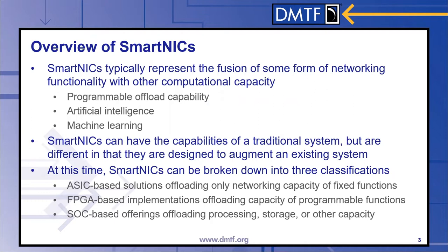SmartNICs are becoming common in the data center. The best way to describe them is some type of networking functionality combined with computational capacity. This computational capacity could include programmable offload capabilities, embedded artificial intelligence and machine learning, deep packet inspection for early malware detection, or other firewalling capabilities. When you think about where the SmartNIC sits in the overall hierarchy of a data center, it's really an extension of an existing computer system — meant to extend an existing server in a rack with its own computational capacity.